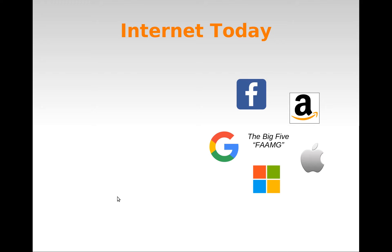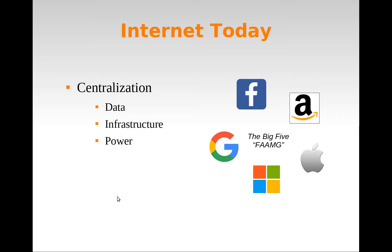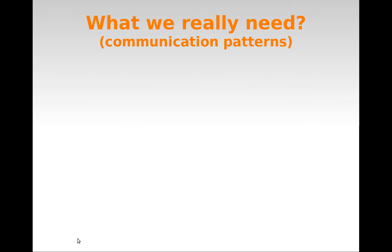The internet today is extremely centralized — very different from how it was first idealized and to some degree practiced between 15 to 20 years ago. Today there is a large centralization of data, infrastructure, and power in the hands of very few companies. And if we want to decentralize content dissemination services, it's interesting to first understand better the current communication patterns.